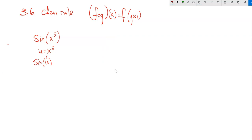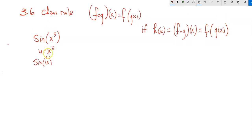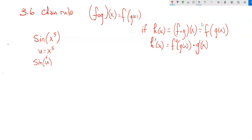Here's the chain rule in two different notations. This is g plugged into f — in this case, g would be x to the fifth and f would be sine, a function plugged into another function. For a composition function, the derivative is found by peeling away layers: derivative of the outside function multiplied by the derivative of the inside function.